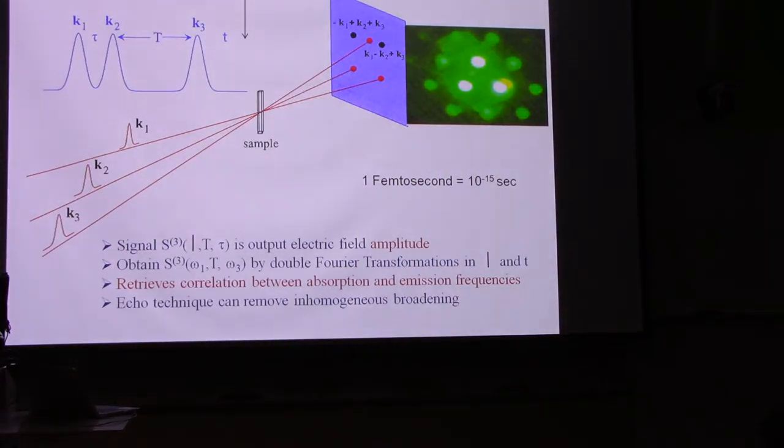Okay, so the way these are probed is with a method called, an experimental method called multidimensional, in this case two-dimensional, femtosecond spectroscopy. This is spectroscopy, which is done on the time scale of 10 to the minus 15 seconds. Very, very fast for a biological system. So we're probing things really at the beginning of a biological process.